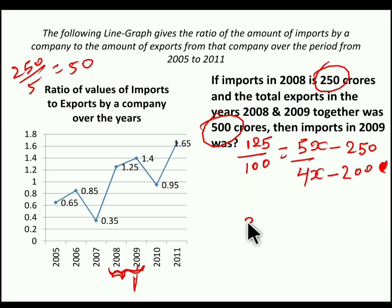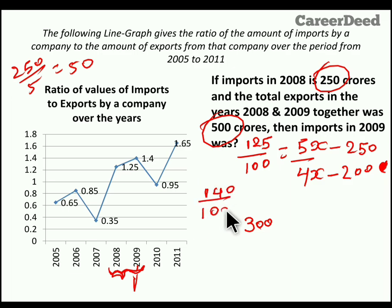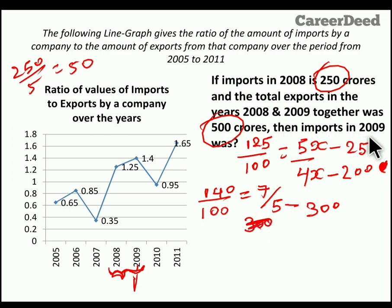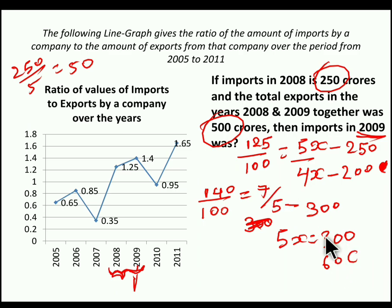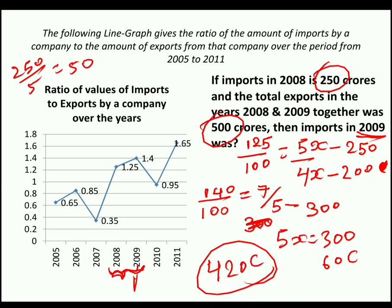In 2009, the ratio of import to export is 1.4, which can be written as 140/100, reducing to 7/5. So 7 is import and 5 is export. We know export in 2009 is 300 crores, so 5 parts = 300 crores, giving 1 part = 60 crores. Import is 7 parts, so 7 × 60 = 420 crores. The answer for this question is 420 crores.